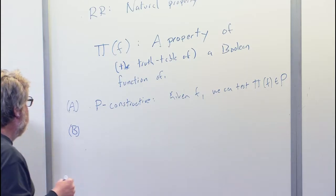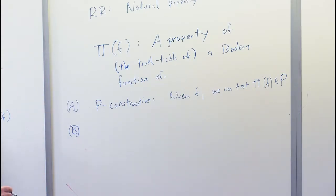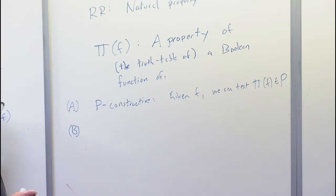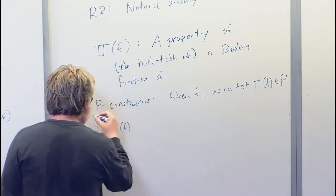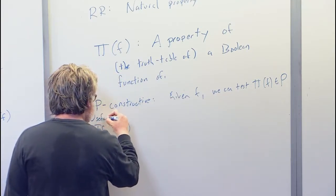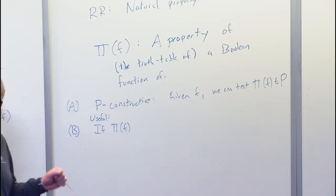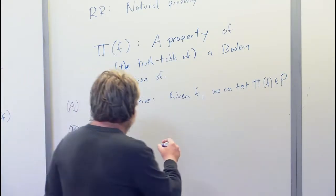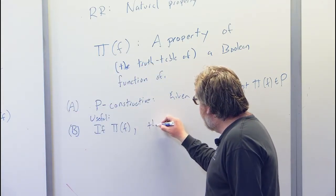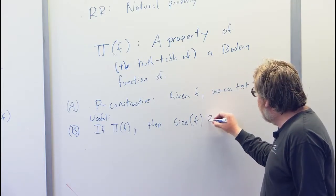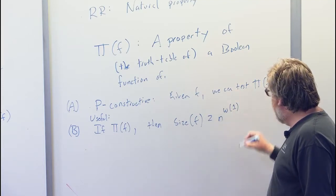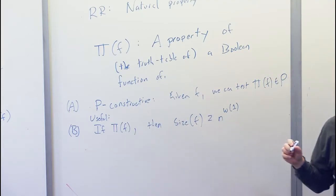The second property is that it has something to do with the circuit complexity of the function — specifically, it's a way of proving that the function is hard. This is called being useful. Technically I'm saying it's useful against polynomial-sized circuits: if pi of F is true, then the circuit complexity of F is at least superpolynomial.